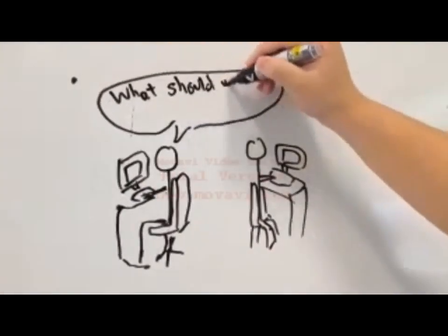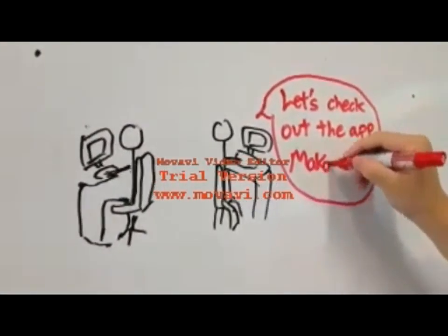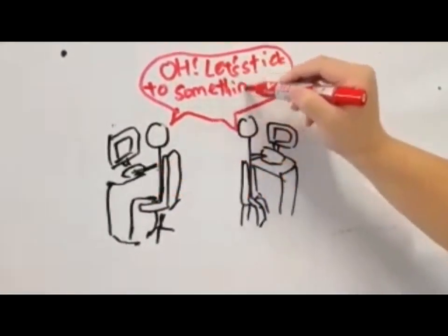What should we have for lunch? questioned his colleague, Bob. Let's check out the app, Makan Sutra, replied Jack. Let's stick to something healthy, they agreed.